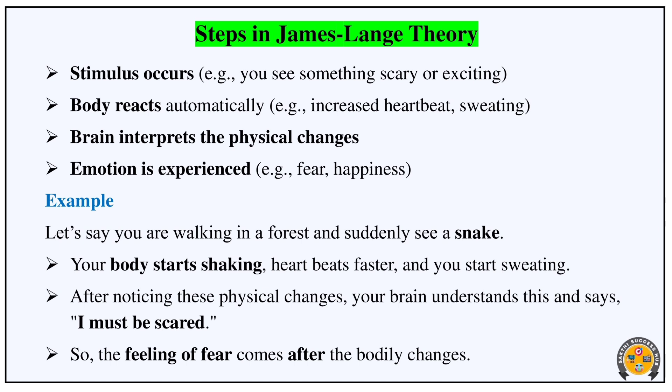The brain interprets the physical changes. You react automatically, and finally you experience the emotion. The body reacts automatically and you experience emotions like fear or happiness. These are the steps of the James-Lange theory.